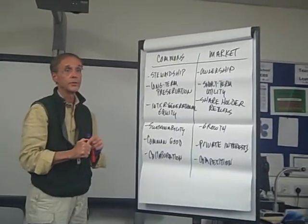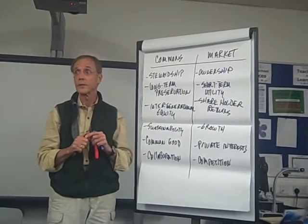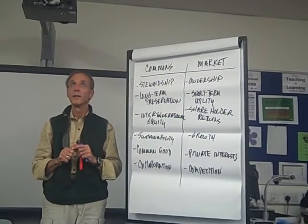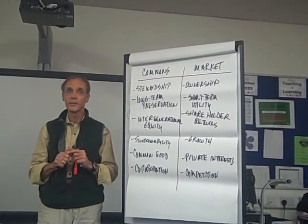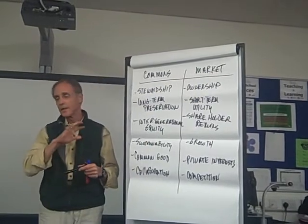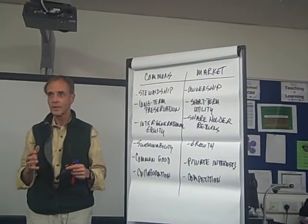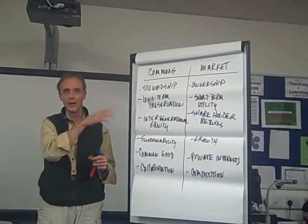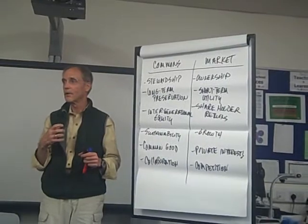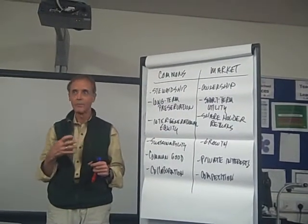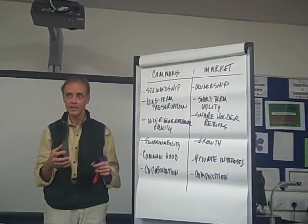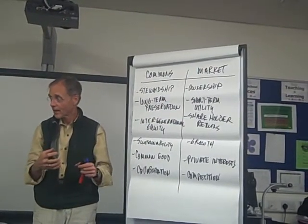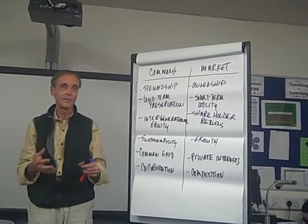You referred earlier to the tragedy of the commons. There was a famous article in 1968 by biologist Garrett Hardin who basically said that whenever you get people together to share a common resource, it degenerates into tragedy. He gave the example of each of us having cows to put on a meadow: our tendency is to maximize our own returns by putting the maximum number of cows there to graze. As a result, if we're all trying to do that, we overgraze, that pasture becomes a dust bowl, and the commons is now a tragedy.